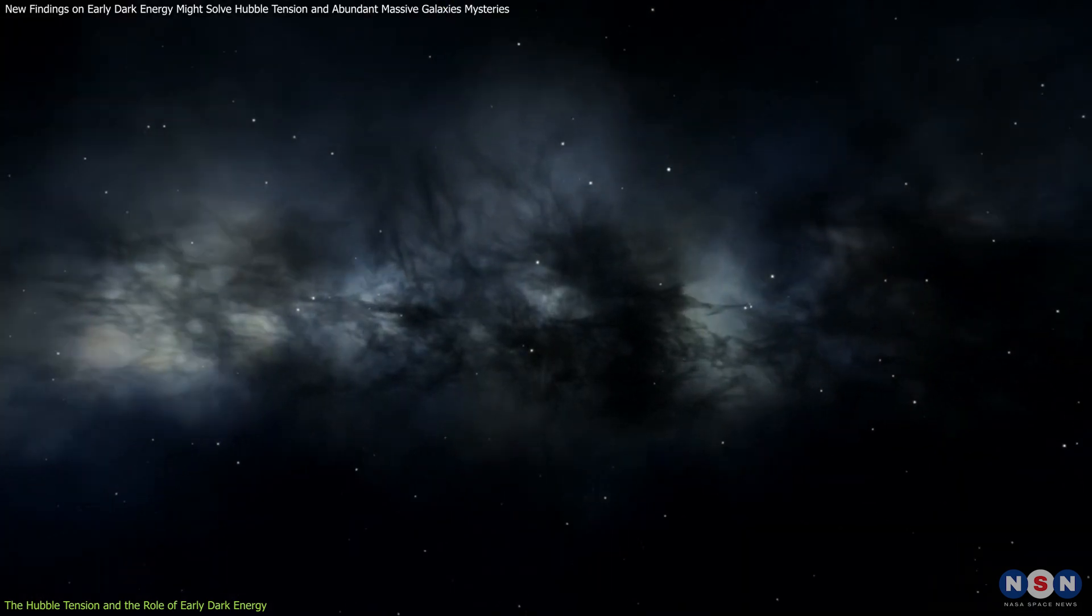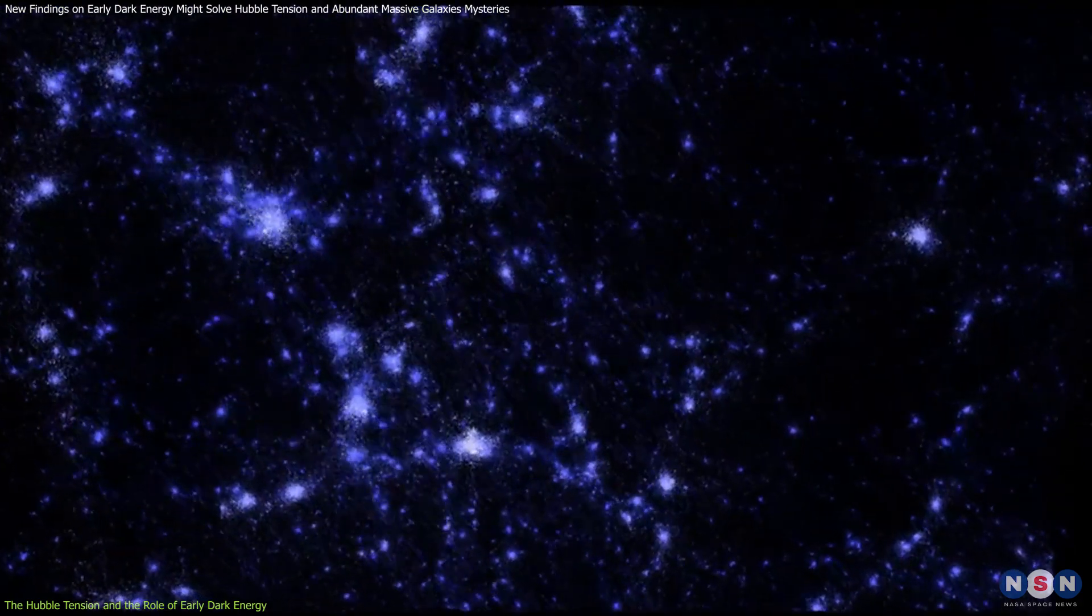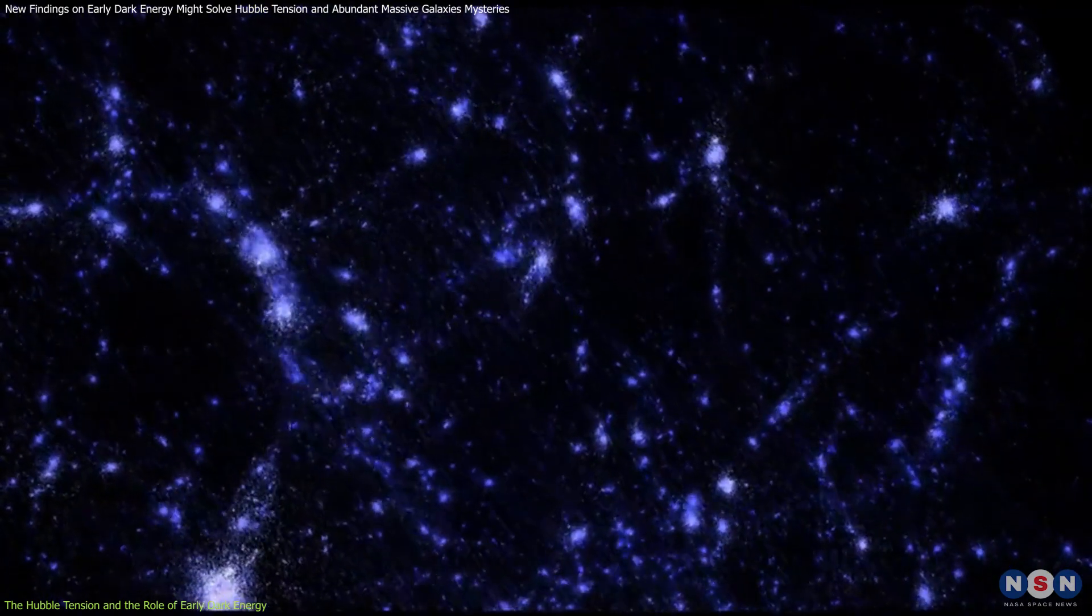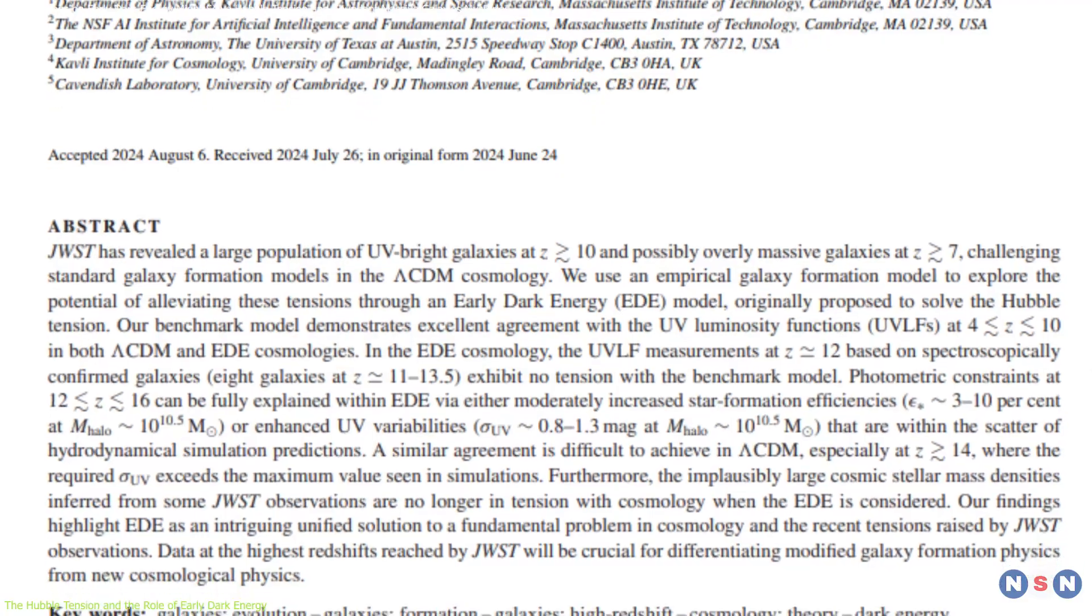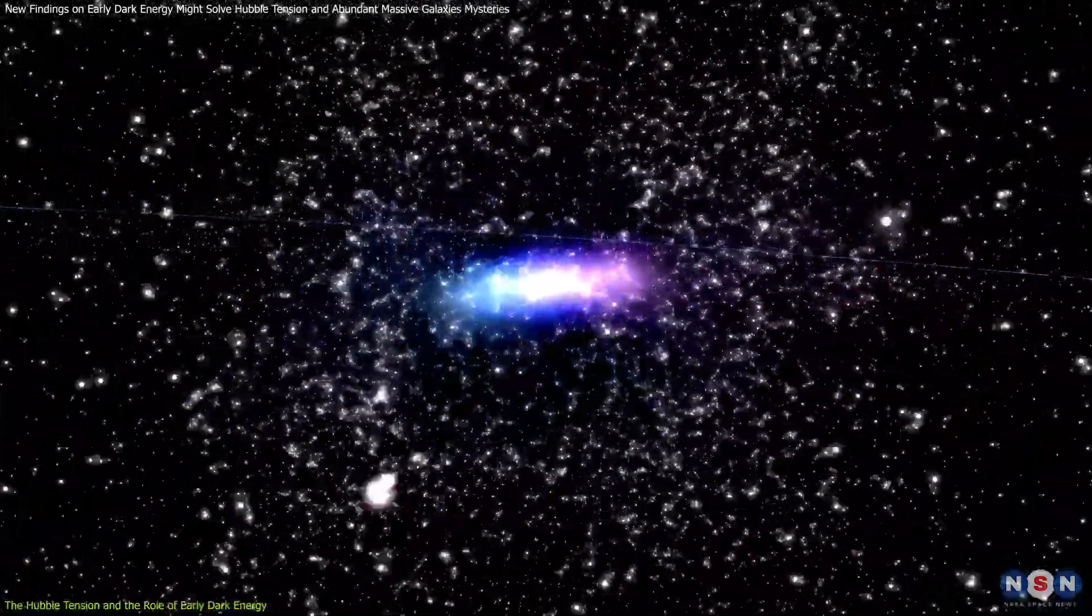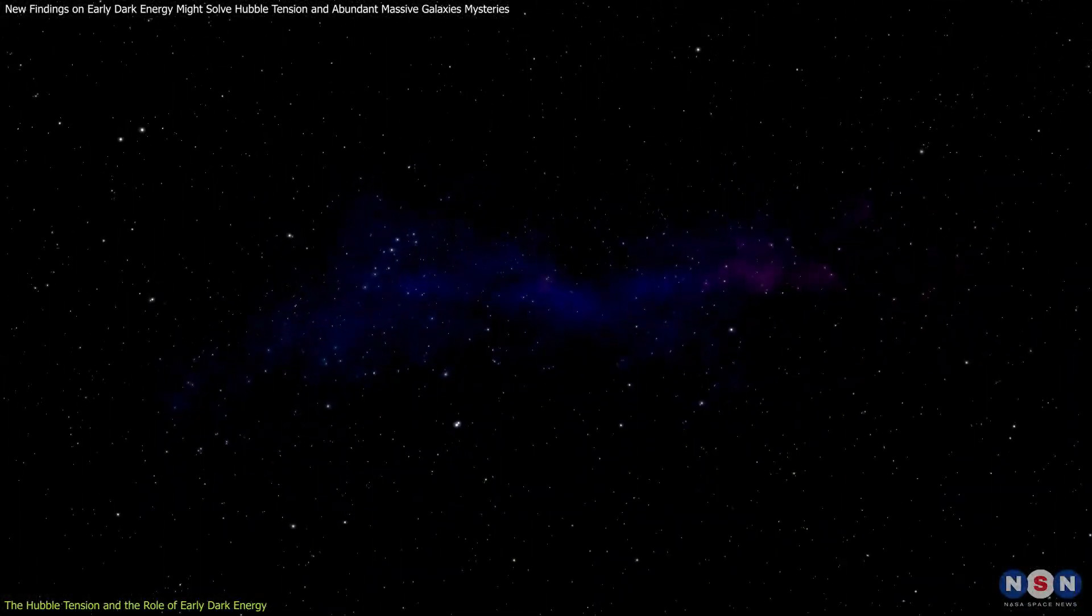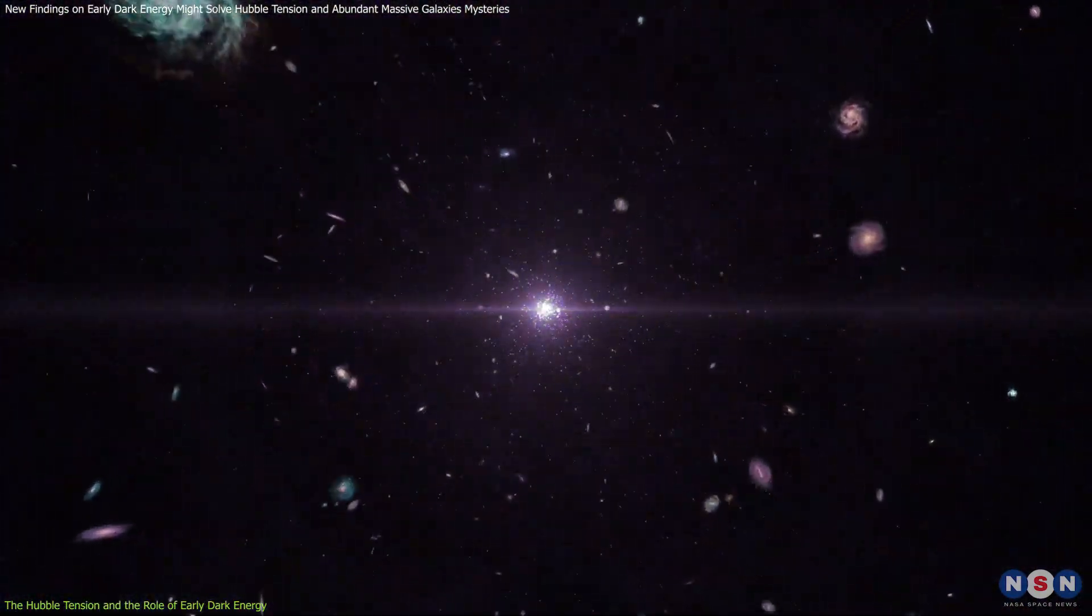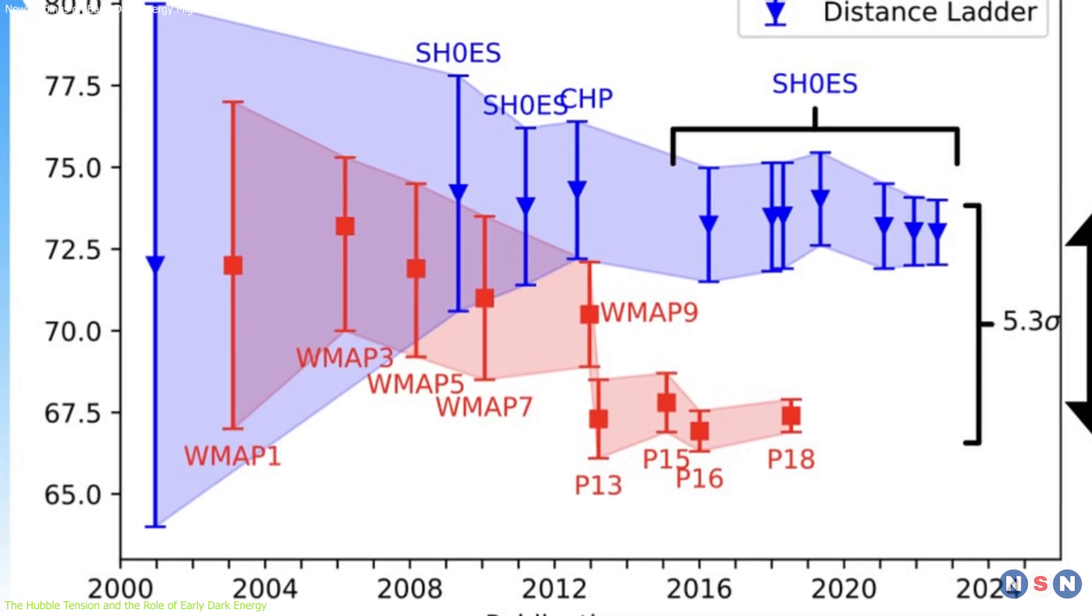Now, here's where early dark energy comes into play. Early dark energy, or EDE, is a hypothetical form of energy that may have existed only briefly in the universe's infancy. According to recent research by MIT scientists, early dark energy could have provided a fleeting but powerful repulsive force, much like an anti-gravity effect just after the Big Bang. This force would have accelerated the expansion of the universe for a short period, impacting the measurements of the Hubble constant derived from the CMB.